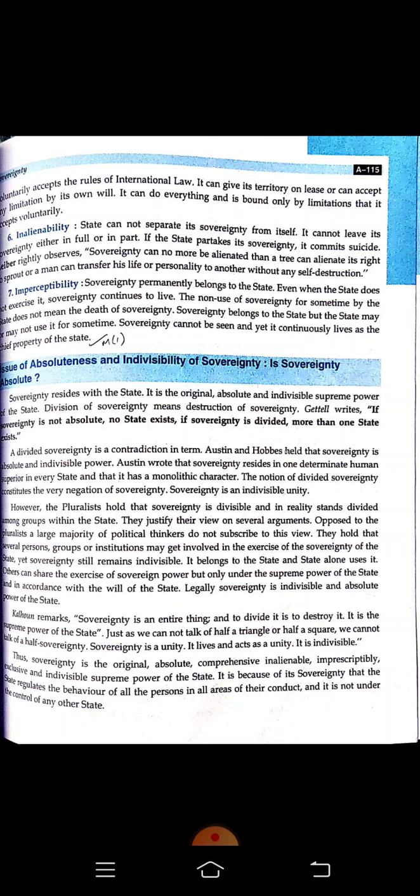Number seven is imperceptibility. Sovereignty permanently belongs to the state. Even when the state does not exercise it, sovereignty continues to exist. Sovereignty cannot be seen, yet it continues to exist — we can find the prominence and dominance of sovereignty but cannot see it. No authority can show which part is sovereign. But as the country is free from external interference and can take its own decisions, we can say that the country is sovereign. Hopefully you understood. Thank you.